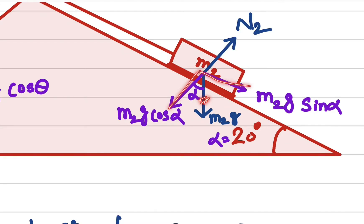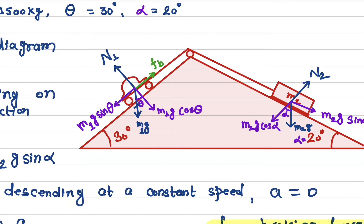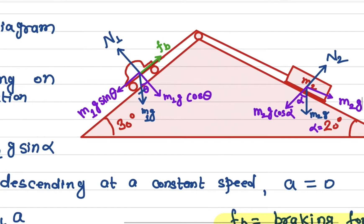We don't need the original weight vector anymore since we've resolved it into two components. The normal force acts perpendicular to the surface for m2 as well. Our goal is to make the car descend at a constant speed, so we write down all the forces acting onto the car.